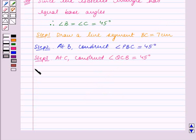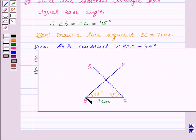Step 4: Let PB and QC intersect at A. So this point of intersection of PB and QC is A.